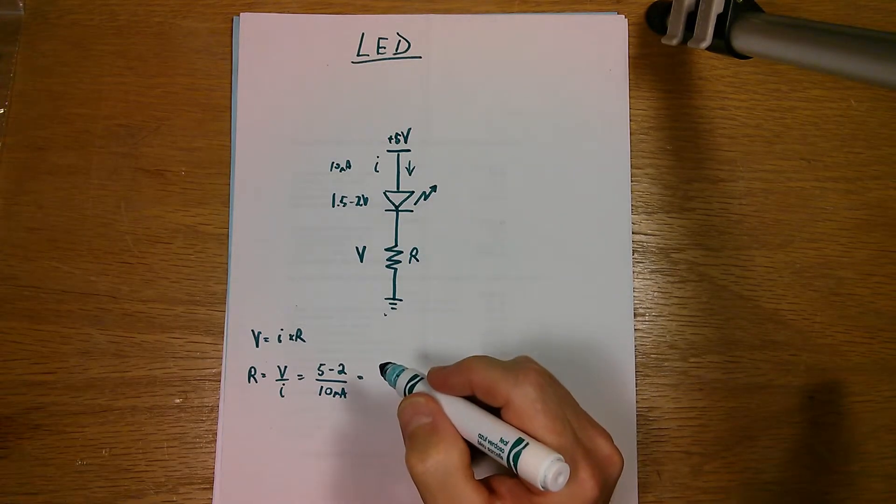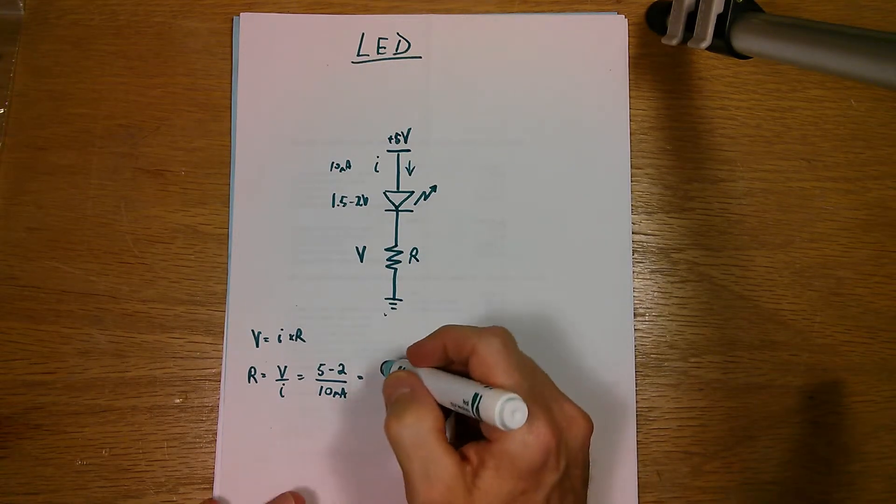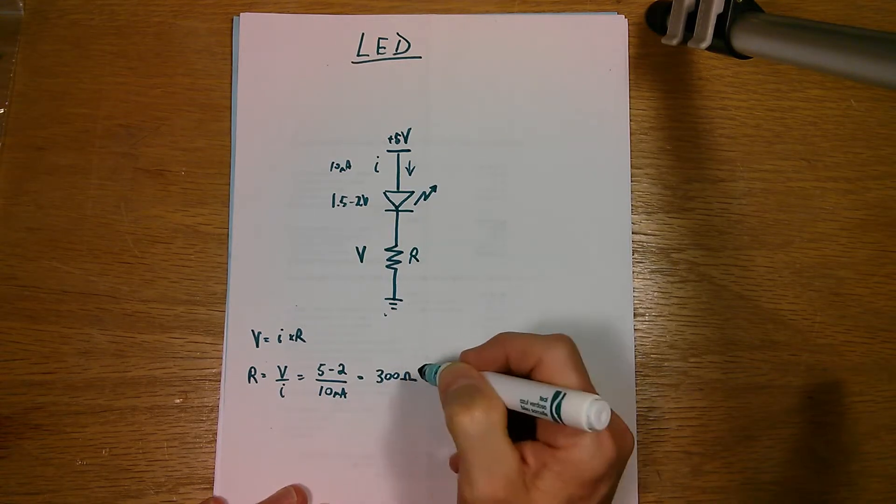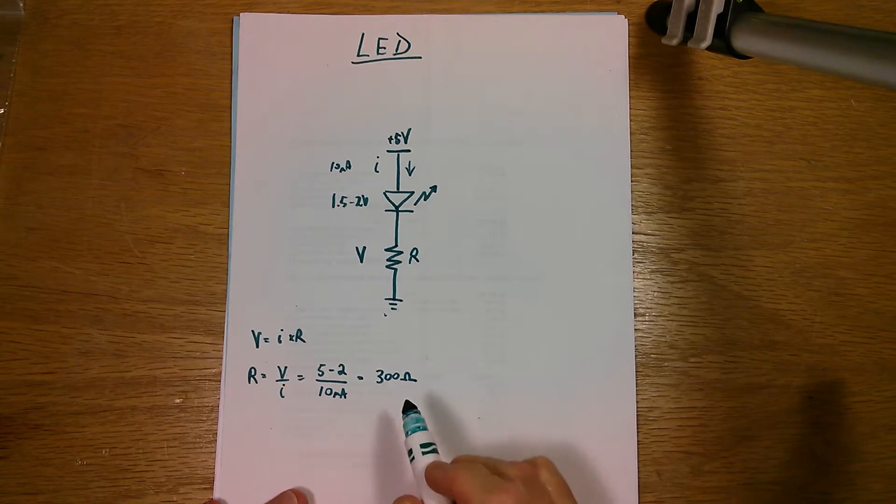And when you do the math, you'll come up with 300 ohms. That's the symbol for Ohm's.